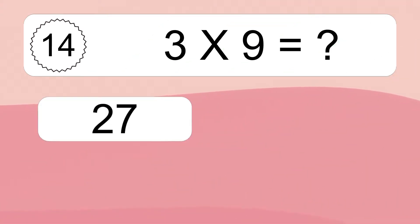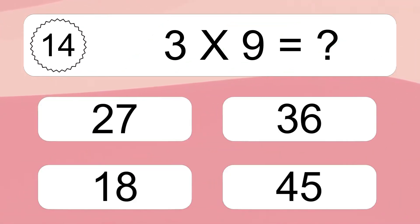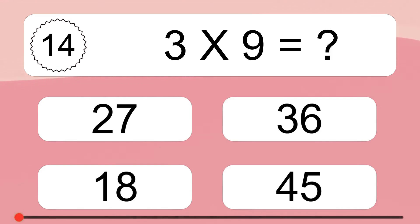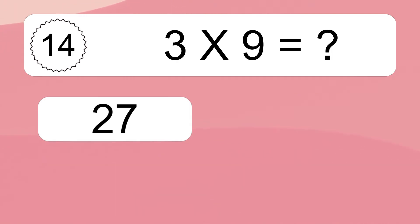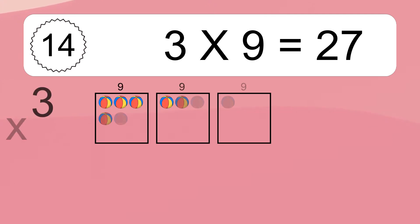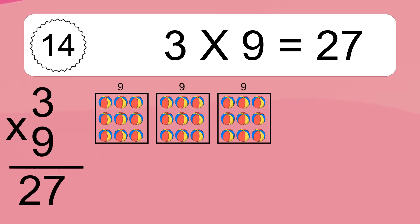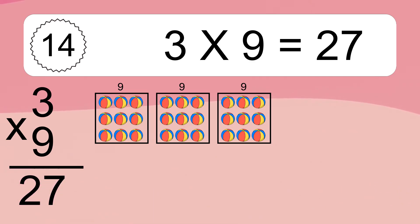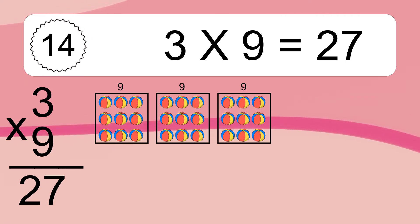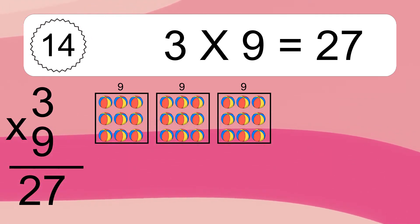3 times 9 equals what? 3 times 9 equals 27. We have 3 boxes and each box has 9 colorful balls inside. If you count all the balls in all the boxes together, you will have 3 times 9 balls. This equals 27 balls.